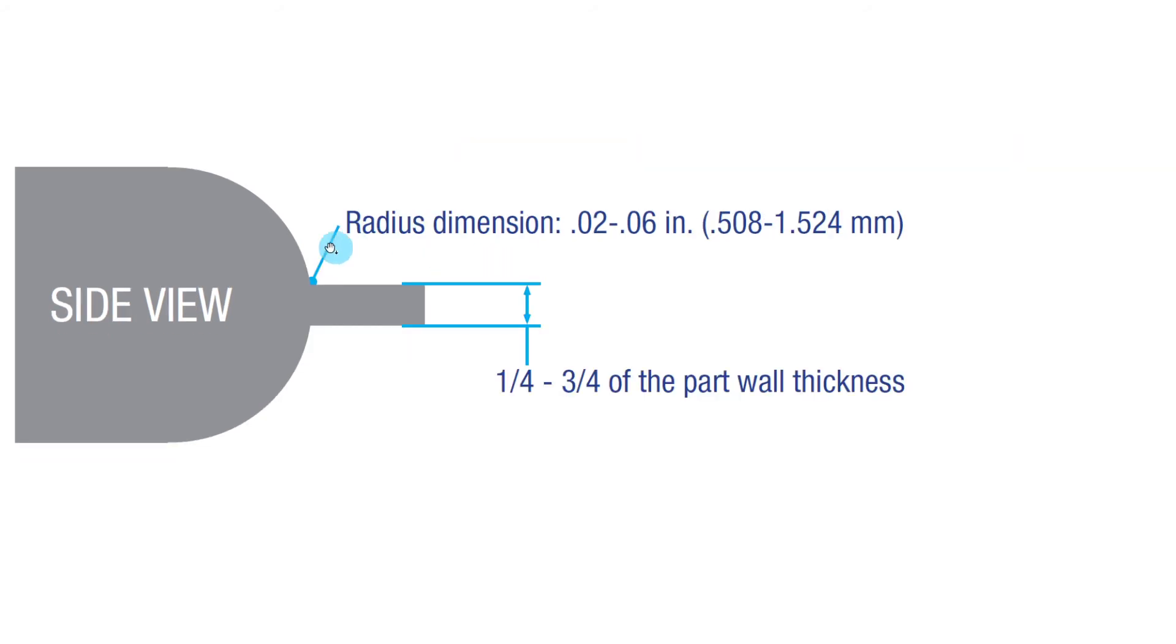If we look at it from the side, there's always going to be a radius here. It's not shown, but there's always a radius so the plastic can flow from the large runner into this small gate. The thickness of it is about a quarter to three quarters of the part wall thickness.